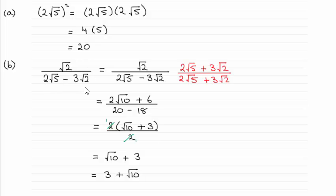For this one, simplifying √2 all over 2√5 minus 3√2, remember to rationalize you need to multiply the fraction by effectively 1, so it's not changing the value but just the appearance. We create that one by switching the sign on the bottom here, so 2√5 plus 3√2.